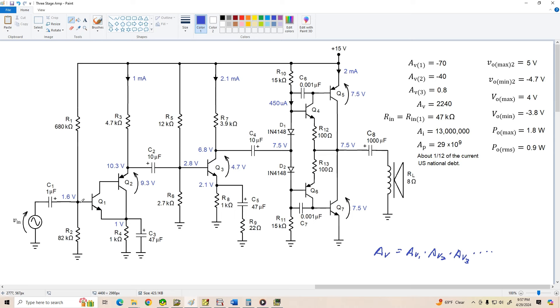It's not going to take much voltage to drive this amplifier to full output. Now, remember, current gain is Rn divided by Rl times AV. So Rn is 47k ohms. Rl is 8 ohms. So 47,000 divided by 8 times 2,240 is a current gain of 13 million. That's pretty good. And finally, the overall power gain is the voltage gain times the current gain. 2,240 times 13 million is 29 times 10 to the 9th power. Normally, I'd consider that a pretty big number, but you have to consider it's about 1 12th of the current U.S. national debt. So maybe that's not such a big number, huh?